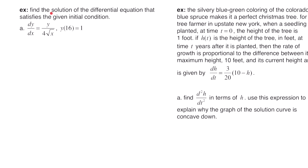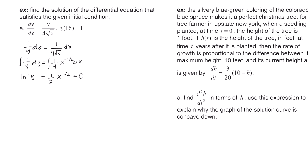This example says: find the solution of the differential equation that satisfies the given initial condition. For part a, we have dy/dx = y/(4√x) with y(16) = 1. We separate the variables and integrate. On the right side, we rewrite √x as x^(1/2) so the integral becomes (1/2)·x^(1/2) = (1/2)√x. Plugging in 16 for x gives √16 = 4, and 4 × (1/2) = 2, so c = -2.